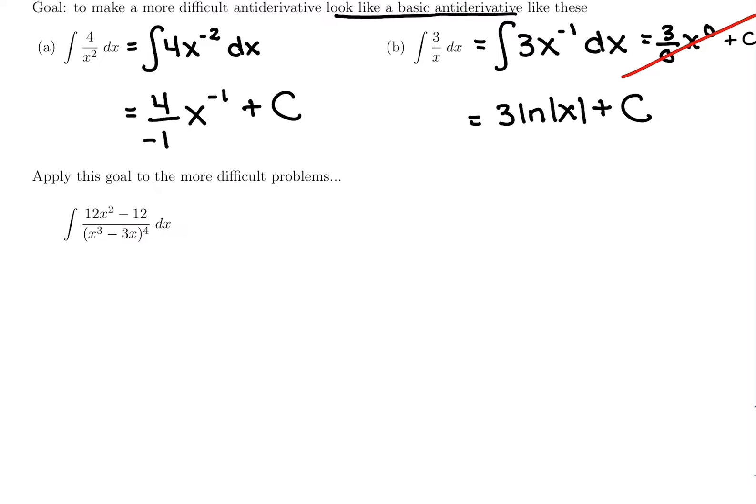We know this one would have u be the denominator because it's to a negative power. And we've seen x's in the denominator before. We rewrote them as negative powers and added one to divide by it and raise it as their new power.